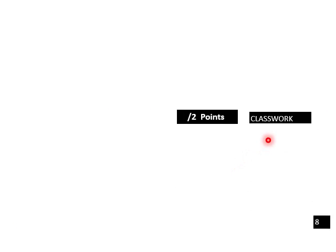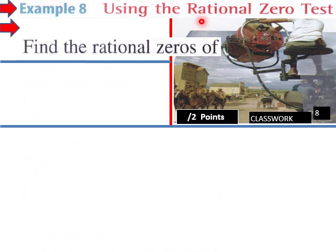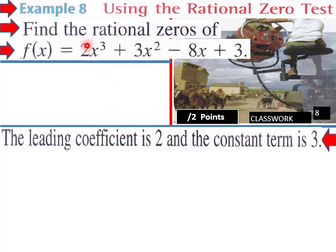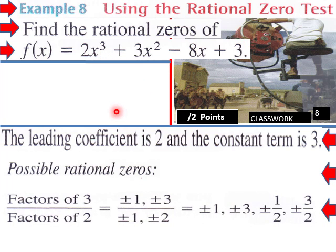Example 8: using the rational zero test to find rational zeros of this polynomial. The leading coefficient is two and the constant is three. Possible rational zeros: factors of three over factors of two — plus or minus one, plus or minus three, plus or minus one half, plus or minus three halves. These are our possibilities for rational zeros — it doesn't cover irrational zeros, but rational zeros. So let's try x equals one using synthetic division — we come up with a zero remainder, so x equals one is a zero.